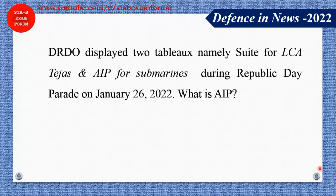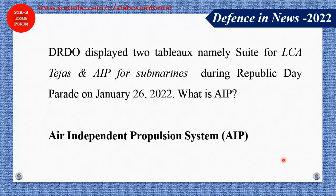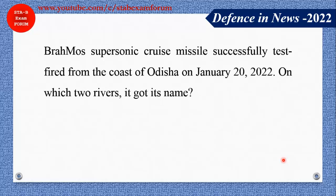In 2022, DRDO displayed two tableaux — one is LCA Tejas and the second is AIP for submarines. What is the full form of AIP? It stands for Air Independent Propulsion. Within water, air is not available, so submarines use this technology to propel themselves — that is why it is called Air Independent Propulsion.